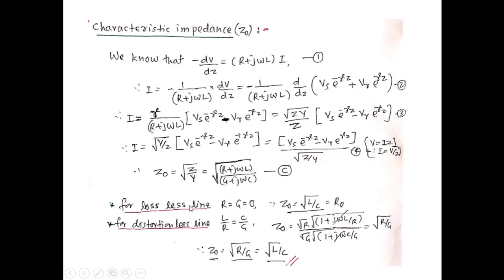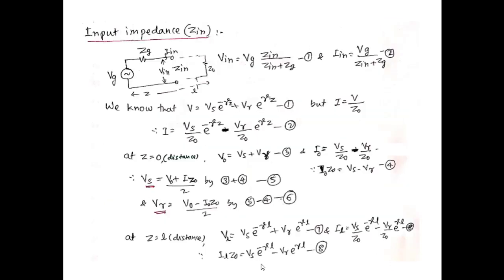For a distortionless line where L/R = C/G, substituting gives Z₀ = √(R/G) = √(L/C). The input impedance can be calculated using the voltage divider formula: Vin = Vg·Zin/(Zin + Zg), and Iin = Vg/(Zin + Zg).